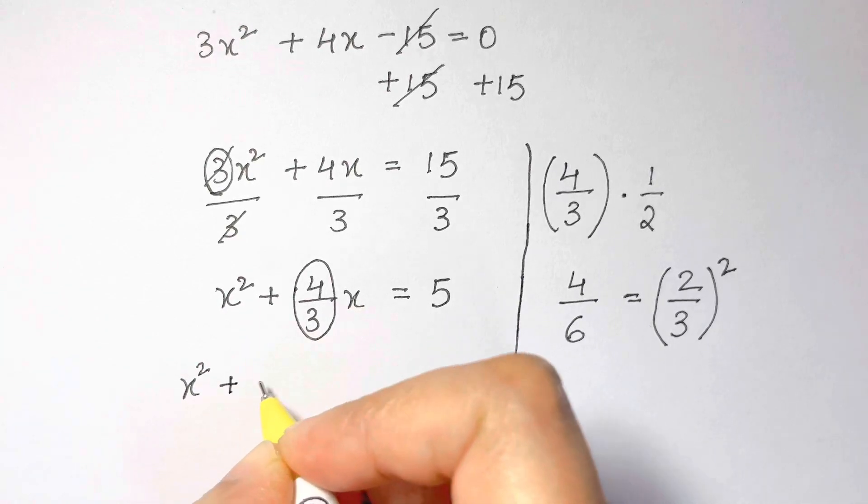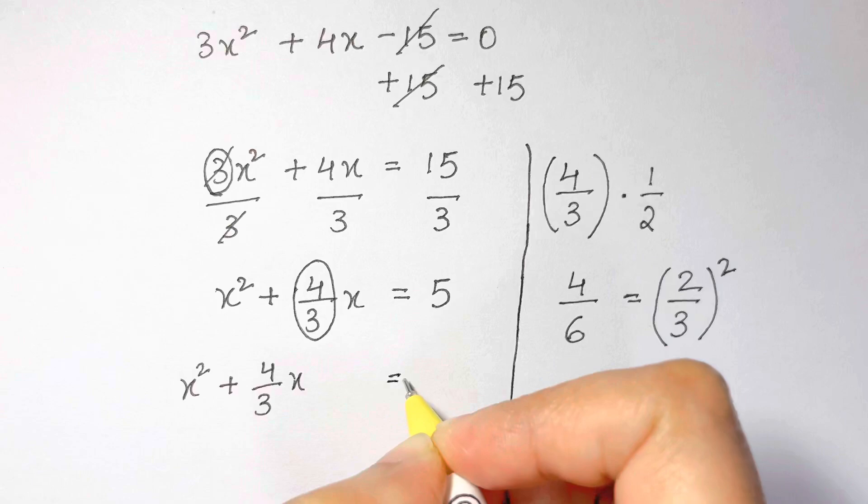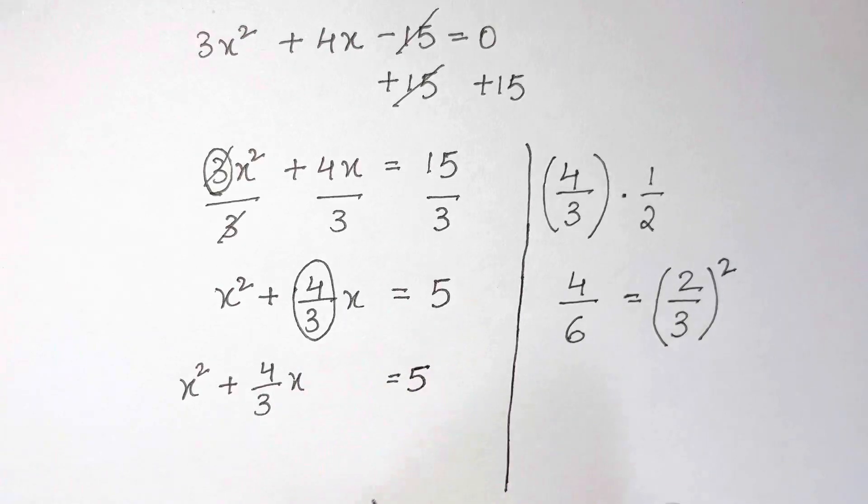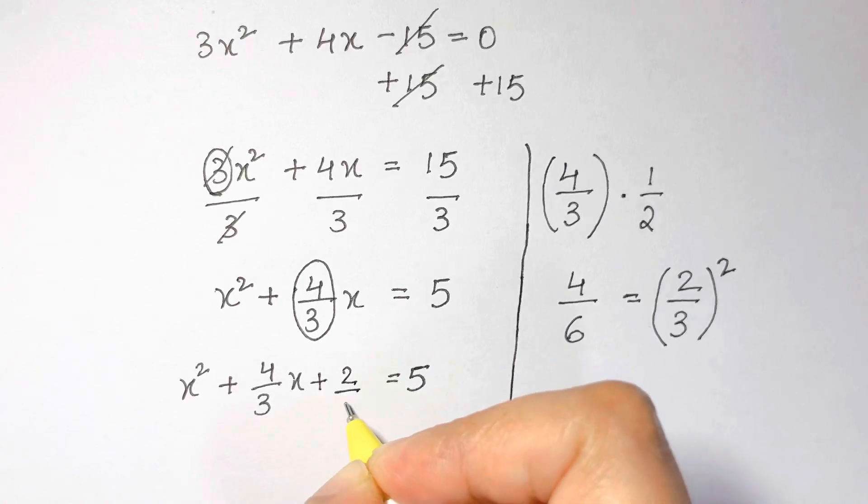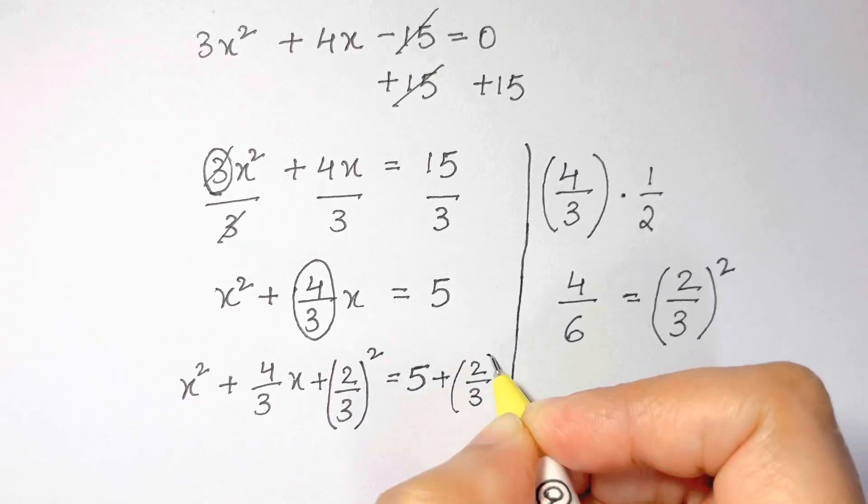x² + 4/3x, and I'm going to write = 5. Now let's write down (2/3)² on this side and (2/3)² on this side as well.